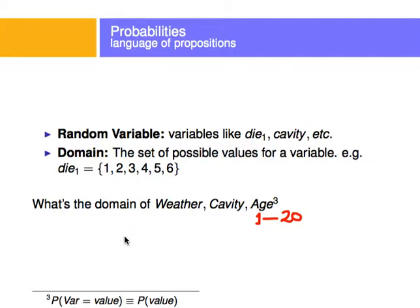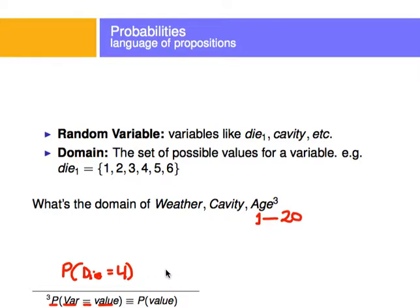Usually we denote the probability of a random variable assuming a value. For example, the probability that the roll of a die falls on a four — that would be the probability that the roll of a die is four. And usually we abbreviate that: if we were just talking about dice, we just say the probability of four.